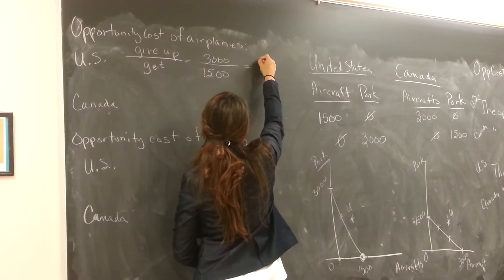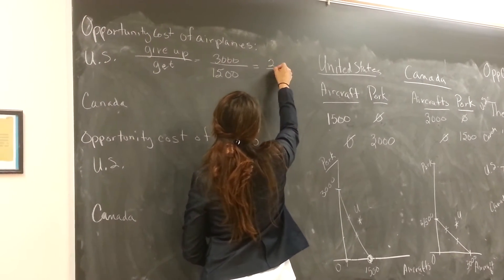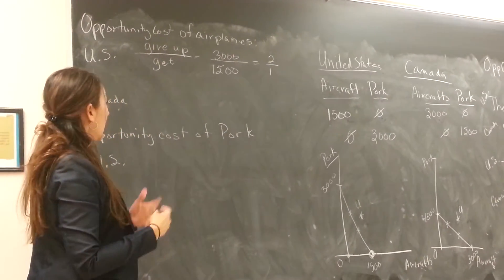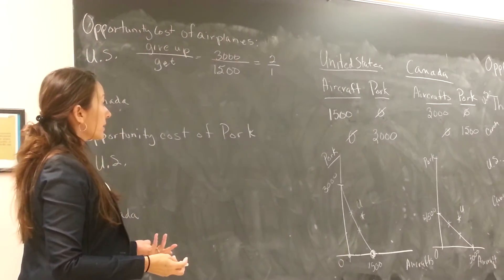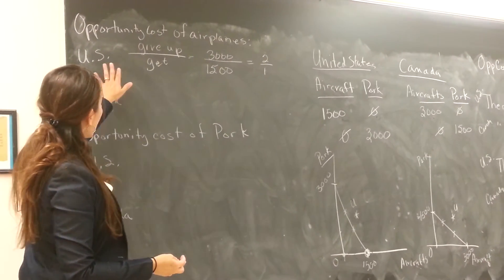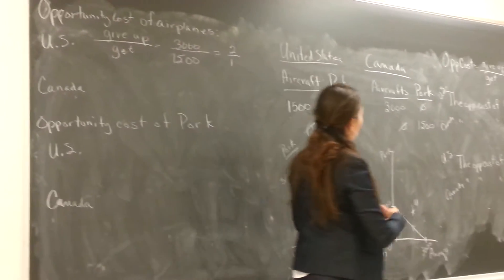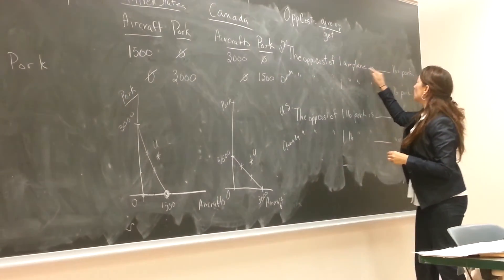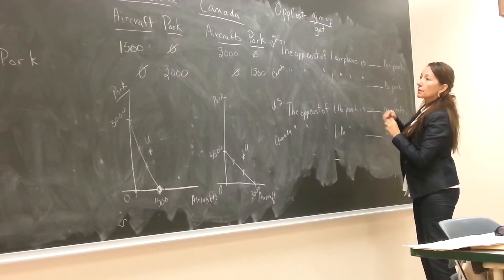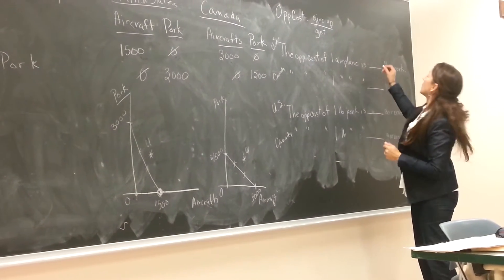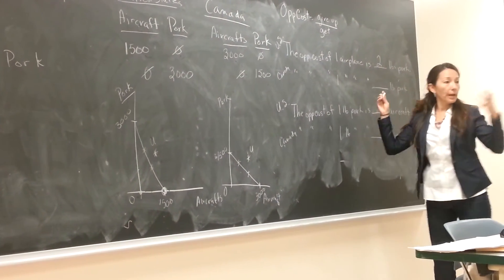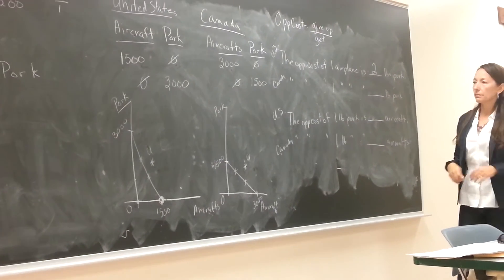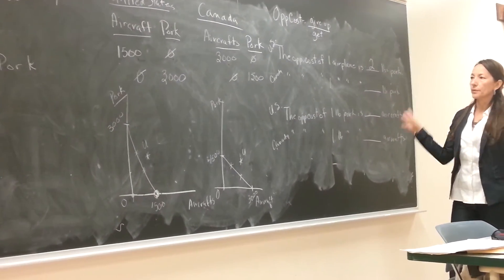We reduce 3,000 over 1,500 and it becomes 2 over 1. So we say: the opportunity cost for the United States of one airplane is 2 pounds of pork.